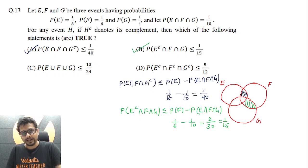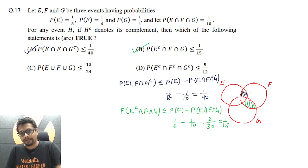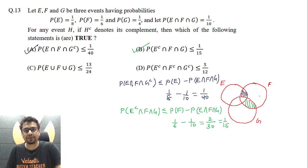Just to emphasize again, this is the same logic used in option A. The probability of this region will definitely be less than probability of F minus probability of E intersection F intersection G, as more favorable outcomes are included in F than in the intersection.